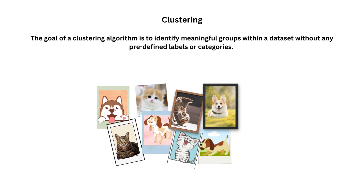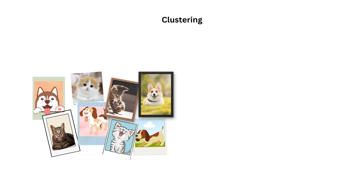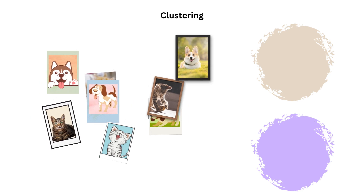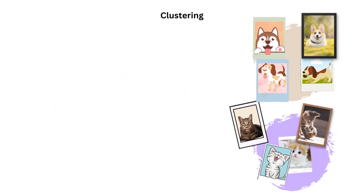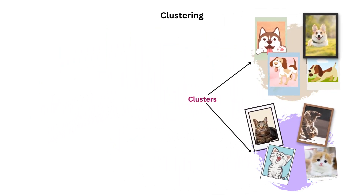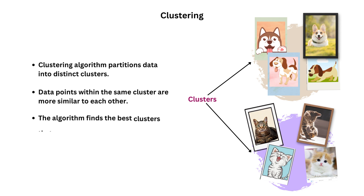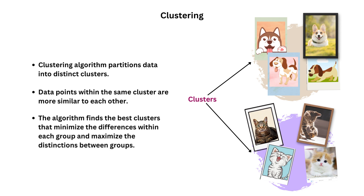See those pictures of cats and dogs placed randomly to form a dataset. We need our algorithm to group similar images together. The algorithm analyzes the visual features of the photos, like presence of whiskers, colour patterns and so on. Then it groups them accordingly, resulting in two clusters — one with images of cats and another with pictures of dogs. Clustering partitions data into distinct clusters where data points within the same cluster are more similar to each other. The algorithm finds the best clusters that minimize differences within each group and maximize distinctions between groups.